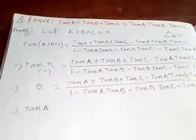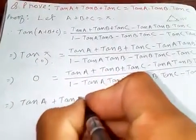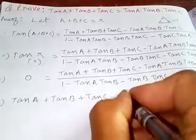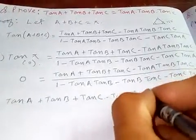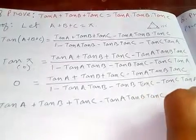Tan A plus tan B plus tan C minus tan A tan B tan C is equal to 0.